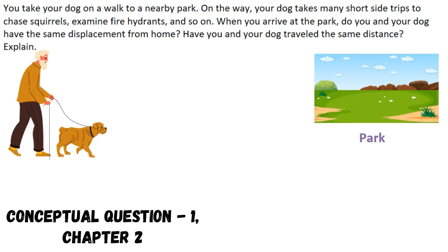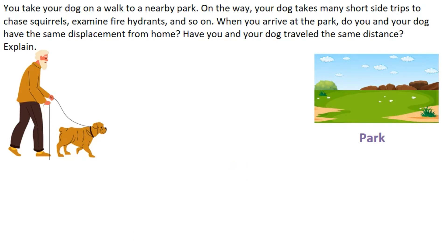Here we are given that you take your dog on a walk to a nearby park. Now while going to park your dog takes many short trips like chasing squirrels, examine fire hydrants and so on. Now we have to tell that after reaching at the park do you and your dog have same displacement from home. This is the first part.